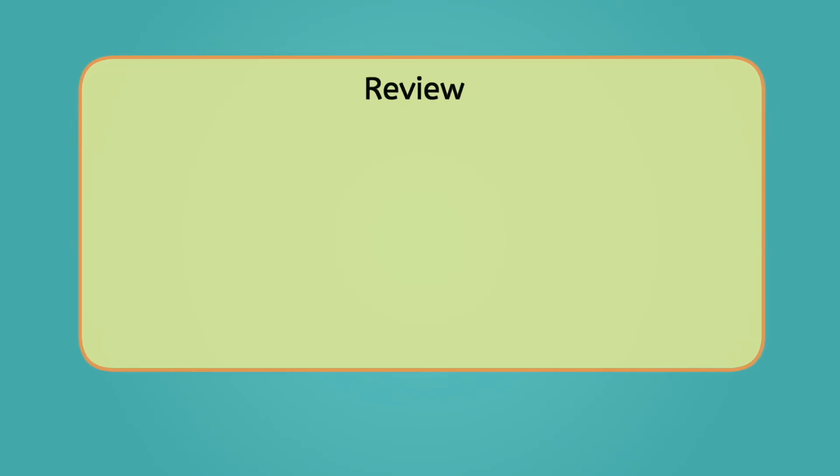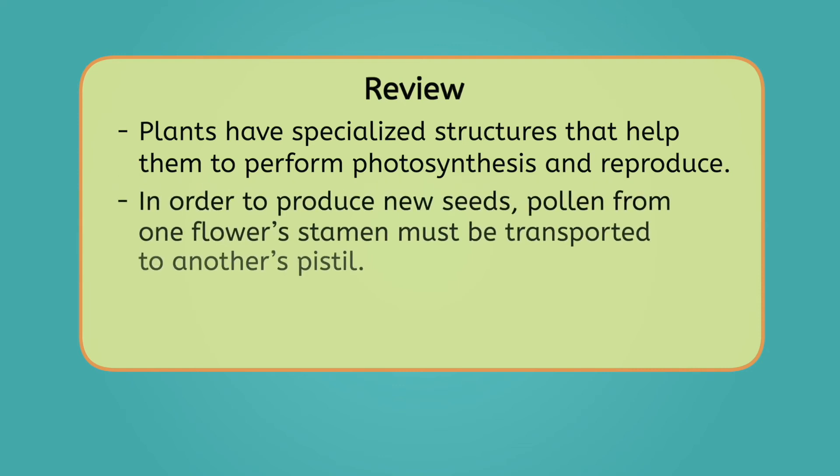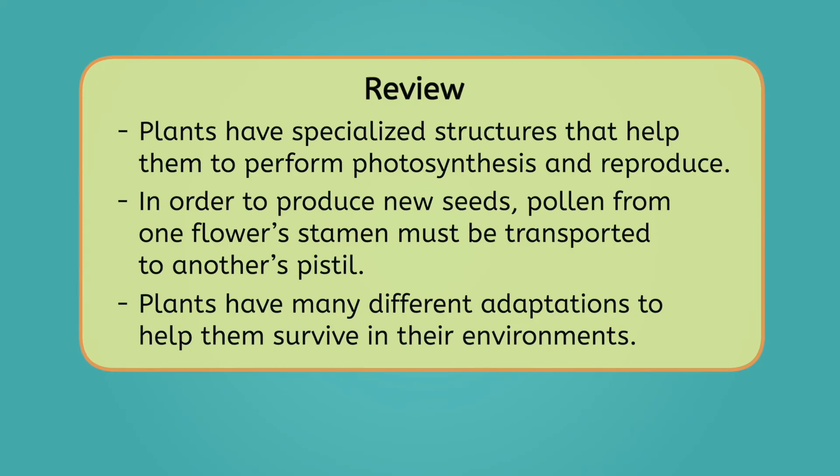Let's review everything we've learned today. Plants have specialized structures that help them perform photosynthesis and reproduce. In order to produce new seeds, pollen from one flower's stamen must be transported to another's pistil. Plants have many different adaptations to help them survive in their environments. With hundreds of thousands of different types of plants, it makes sense that it's not one-size-fits-all when it comes to plant care. I need to keep in mind the conditions they thrive in. Remember scientists, curiosity is the architect of discovery. See you next time!